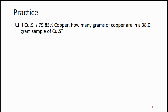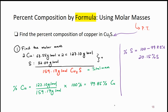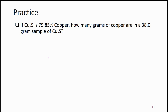Now here is a problem where you have to do what you did in reverse. The percentages are given to you, and they want you to figure out how many grams of copper are in a 38-gram sample of copper one sulfide. The 38-gram sample is the total mass, and all they've given is the percentage — basically the same percentage we calculated. But now the total mass is different, so we have to go backwards.